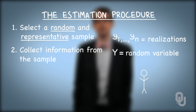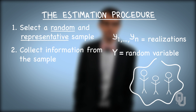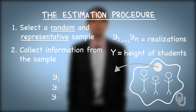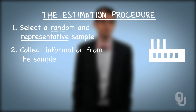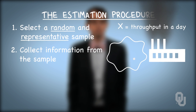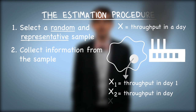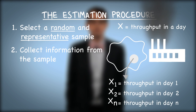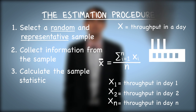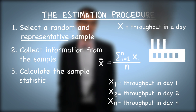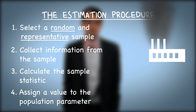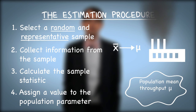For example, say we want to estimate the mean height of students at a university. The population describes the students at the university, and the random variable of interest is height of students. We choose a random and representative sample of those students, then measure their individual heights. From an engineering perspective, we might want to learn more about the mean throughput per day of a particular production line. The sample would be a randomly collected set of days, and the realizations we measure each day would be the day's throughput. The third step is to calculate the sample statistic of interest. In the fourth step, we assign a value to the population parameter we want to estimate based on our sample statistic. Our estimate of the overall mean throughput for all days is the value we found from our sample.